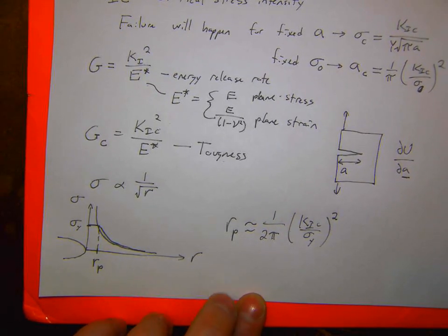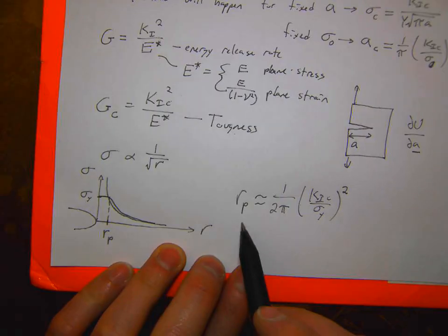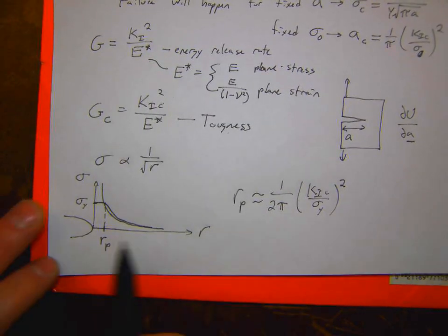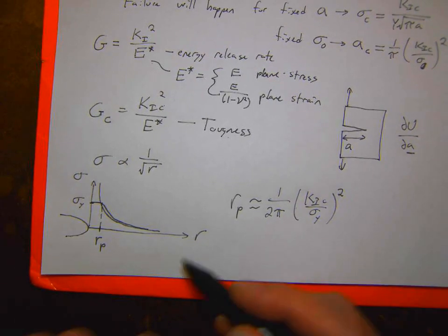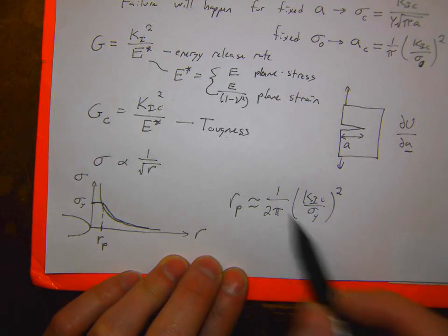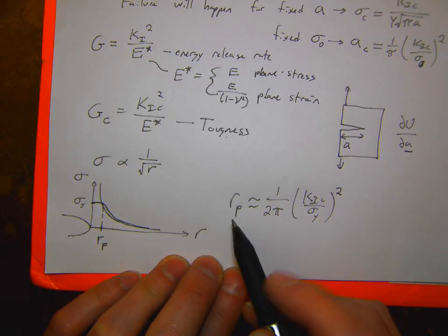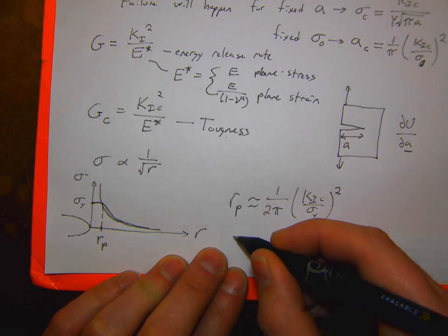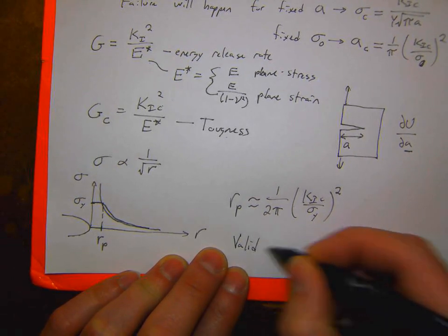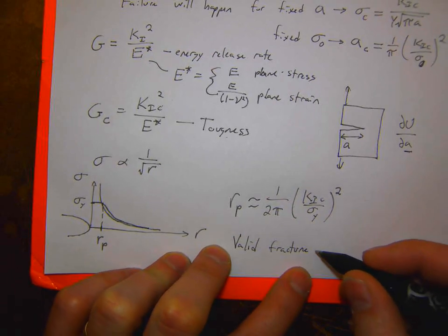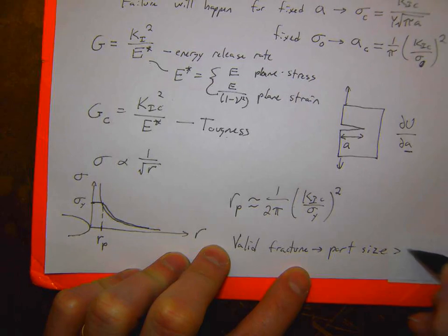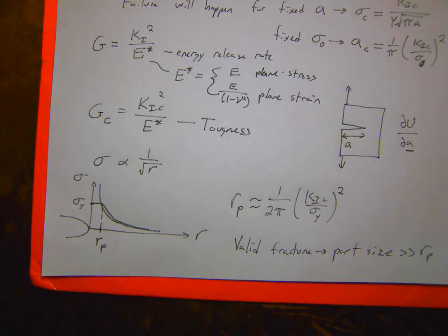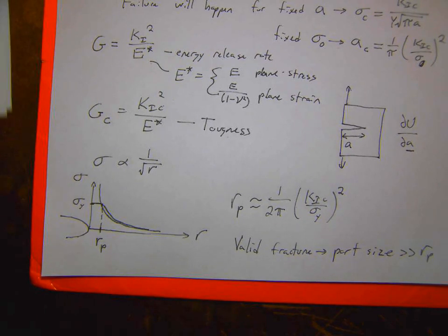Based on the size of this plastic zone, we can determine whether we can perform a valid fracture test. For different materials, plugging in constants gives the plastic zone size. For a valid fracture test, the part size must be much greater than the plastic zone size.